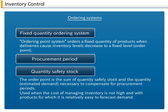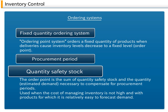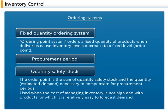In addition, the minimum required inventory quantity in order to avoid shortages is called safety stock. The order point in a fixed quantity ordering system is the sum of safety stock quantity and the estimated demand quantity necessary to compensate for procurement periods. A fixed quantity ordering system is used when the cost of managing inventory is not high, or when it is relatively easy to forecast demand.